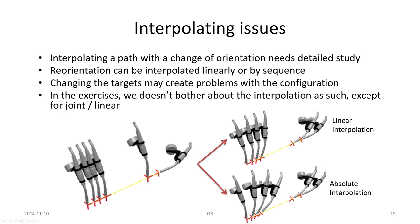There are some issues related to interpolation as well, and some different ways to handle it, especially for orientation — called linear interpolation or absolute interpolation, which work in different ways. Usually in most cases it is not a big issue, but in some cases it might be an issue if the orientation needs to be controlled in a specific way for a certain process.